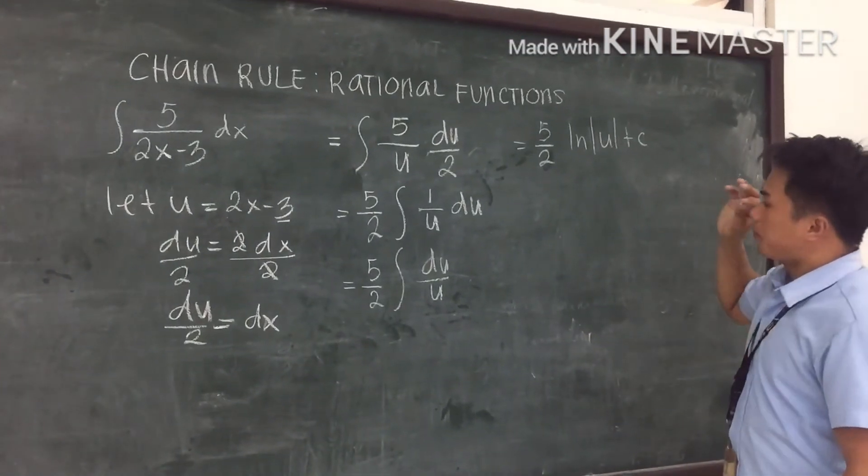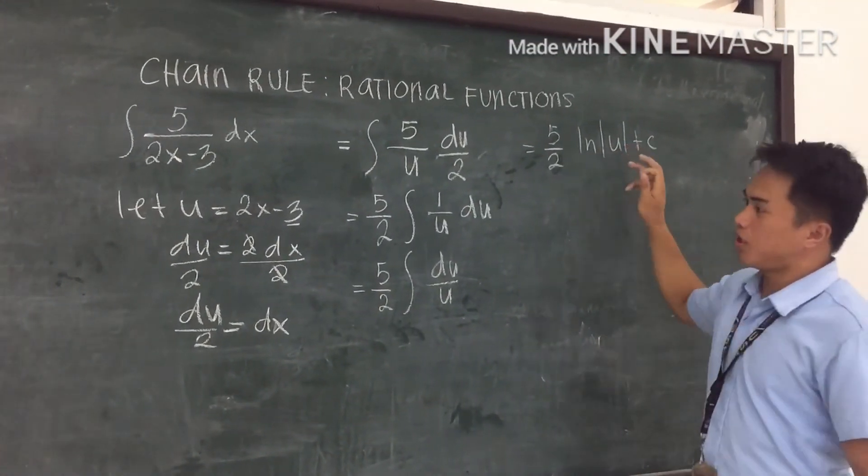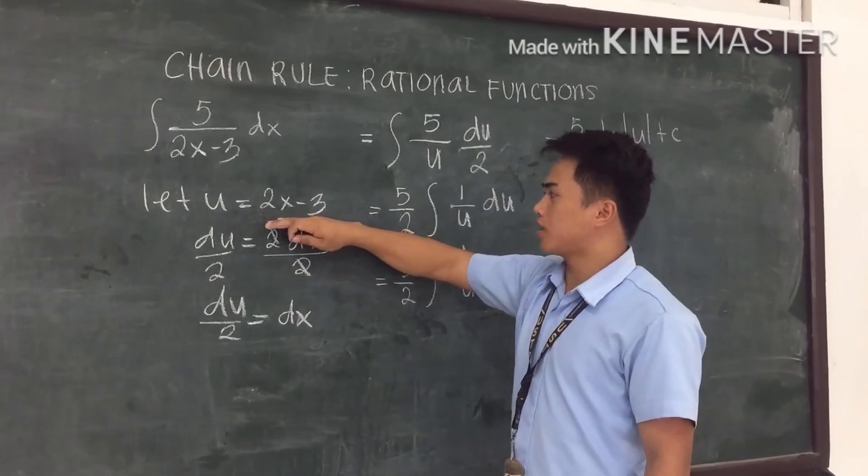Now substitute the value of u, which is 2x minus 3.